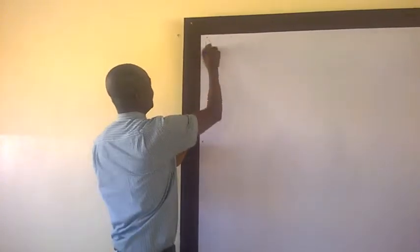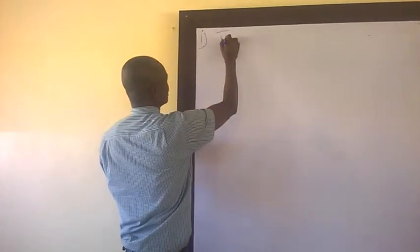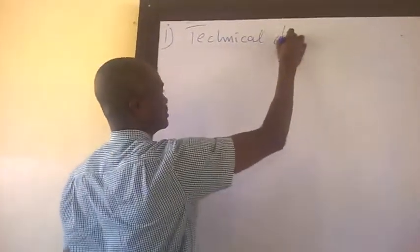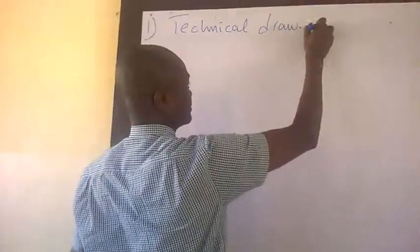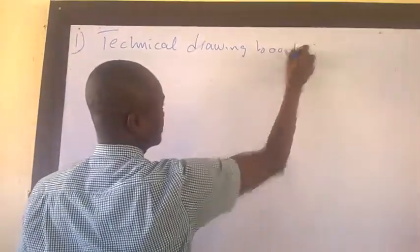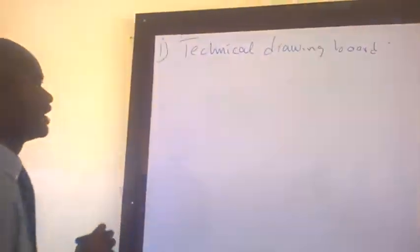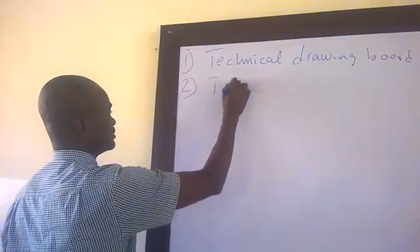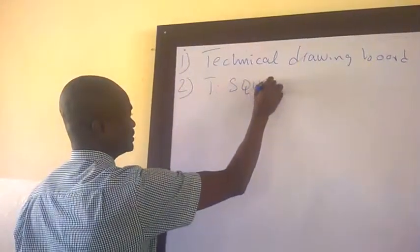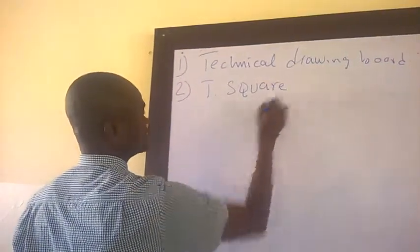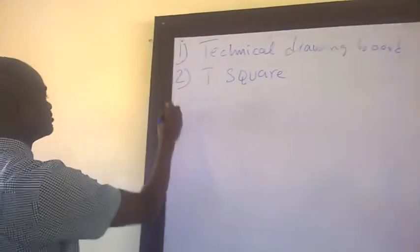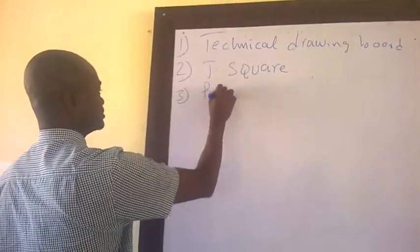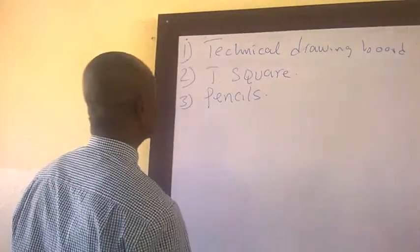The first thing we have is the technical drawing board. The second thing there is T-square. The third thing here is the pencils.